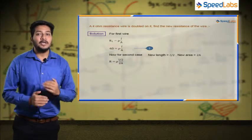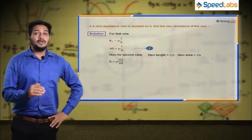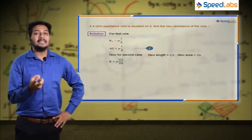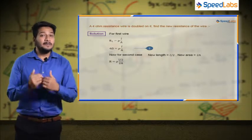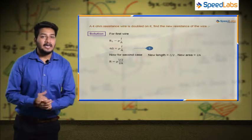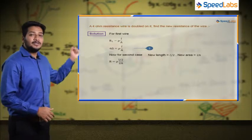Now keep in mind that rho will not change because rho is the property of the material. So in both cases the resistivity is the same.